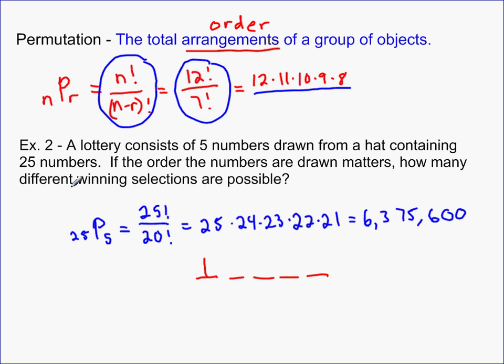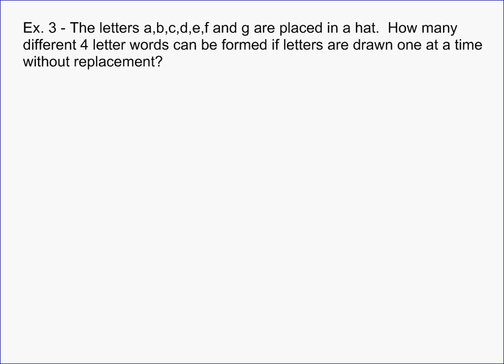Our last example dealing with permutation says, the letters A, B, C, D, E, F, and G are placed in a hat. How many different four-letter words could be formed if letters are drawn one at a time without replacement? Well, the first thing to recognize is when you talk about words in math, we're just talking about a combination of letters. It doesn't actually have to be a Webster word, meaning a word in the Webster dictionary. So how many different combinations of letters is another way to say that. So in this case, it's going to be, well, I've got seven letters I'm choosing from. I want to permute four of them because order does matter in a word. Whenever you're dealing with a word, order always matters. So that's just going to be, start with seven and count down four numbers. Seven times six times five times four, which is going to equal 840. So there would be 840 different words that are possible of being created just using those seven letters and doing four at a time, just using four of those letters.